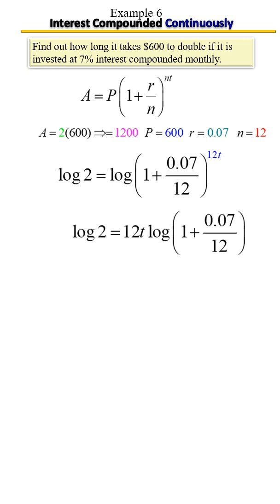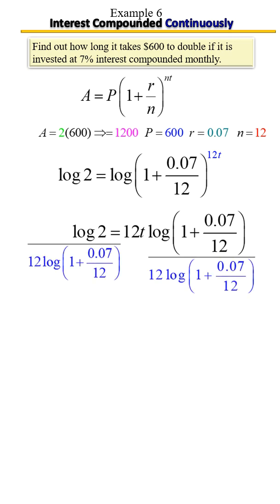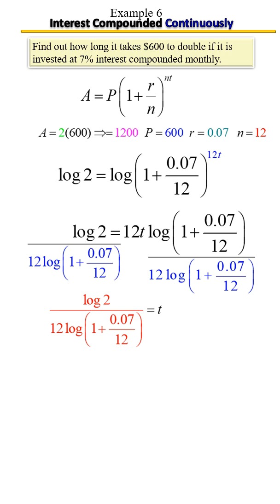Now that we've brought the exponent out, we have one last step to solve for T. T is sandwiched in with other terms, and since they're joined by multiplication, we divide by everything except T to isolate it. Take your scientific calculator, plug in the top, plug in the bottom, press enter, and you should get approximately 9.9. So it will take about 10 years for $600 to double.